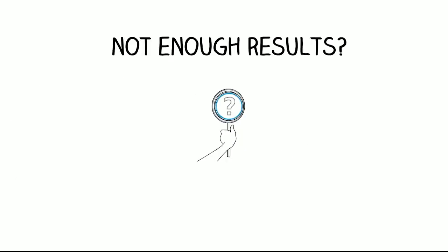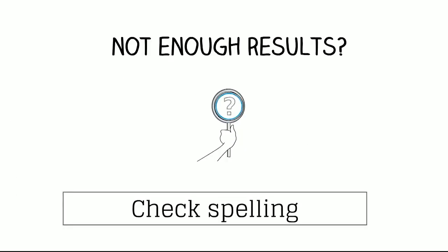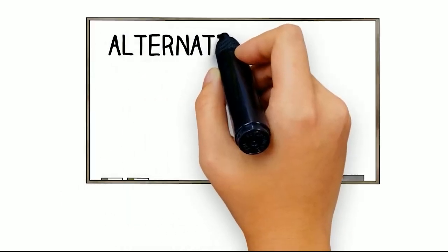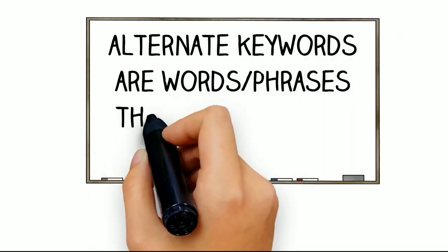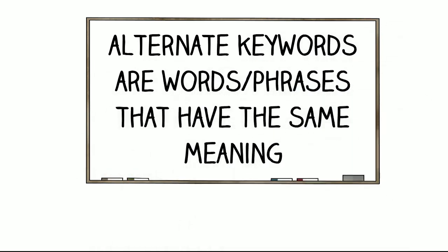When you don't get enough results, you should check your spelling and look for typos. In some cases, you might also want to consider using alternate keywords, which are different words or phrases that have the same meaning as your main keywords.